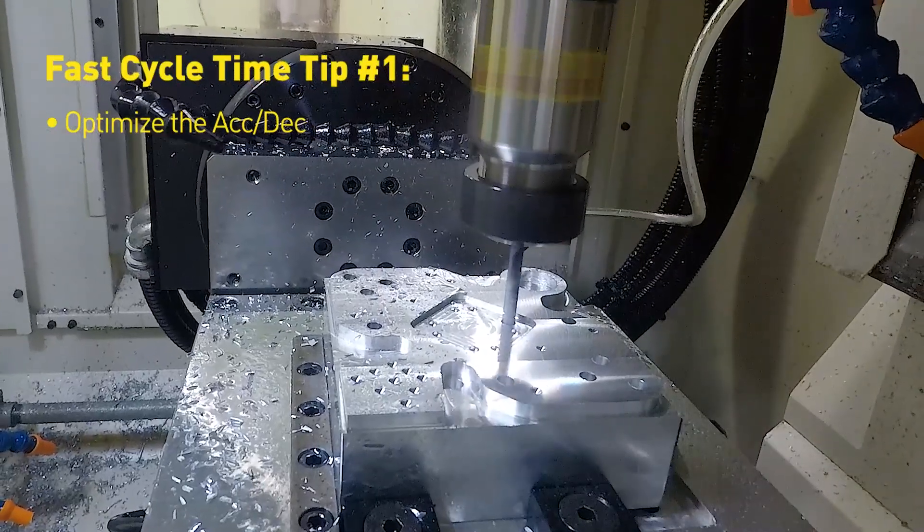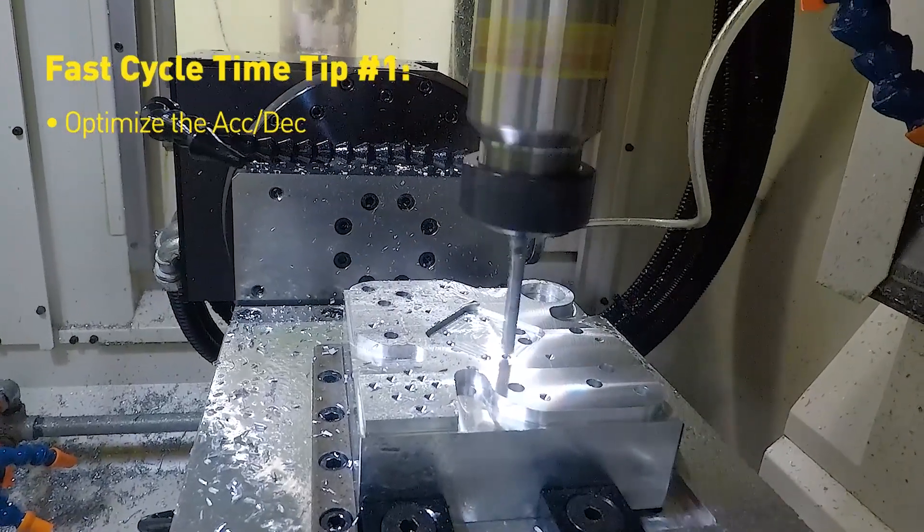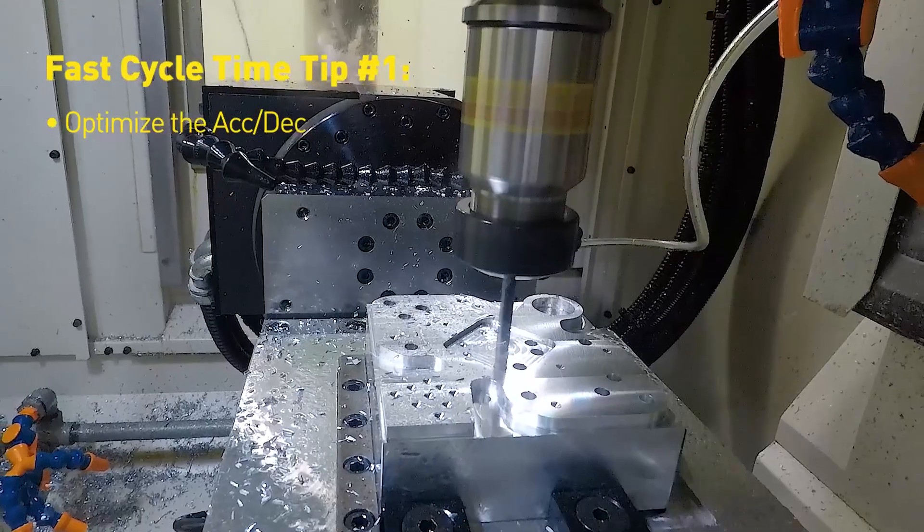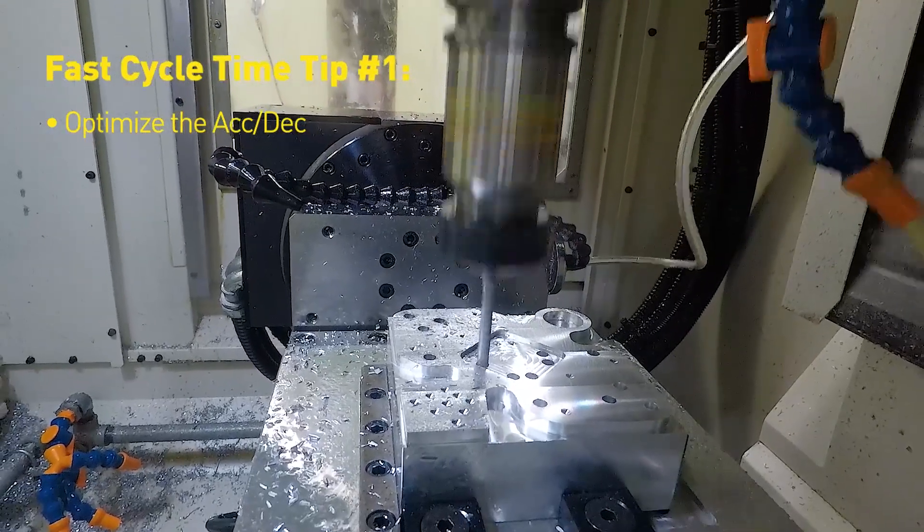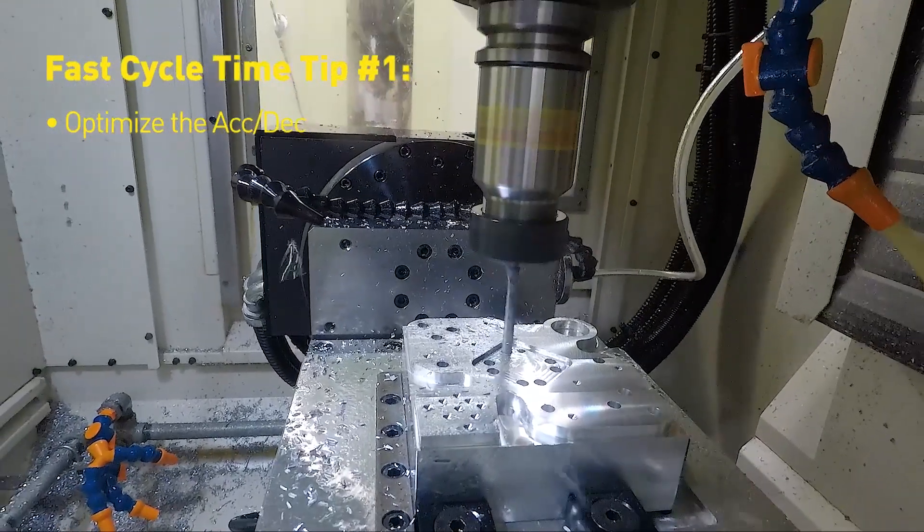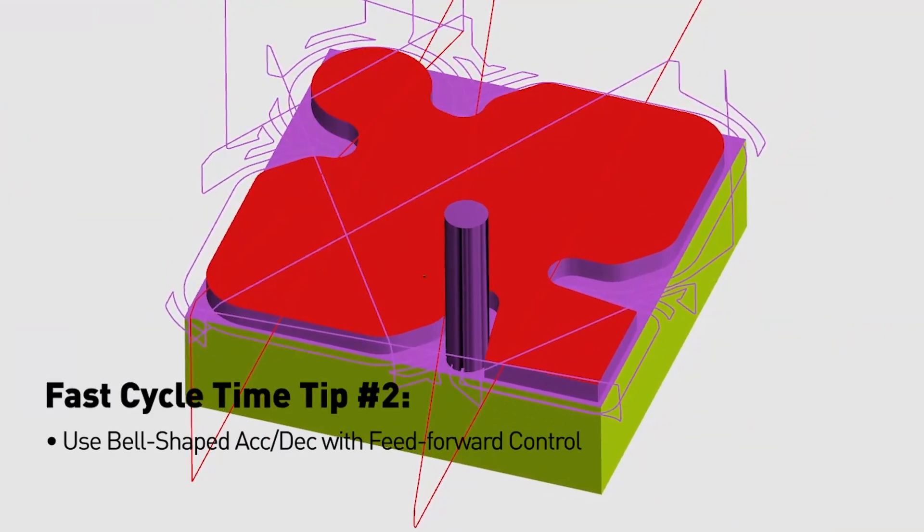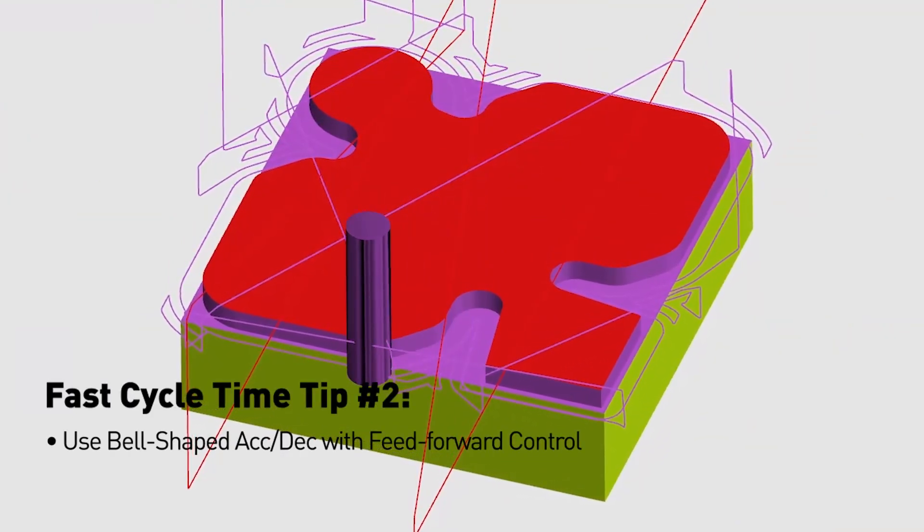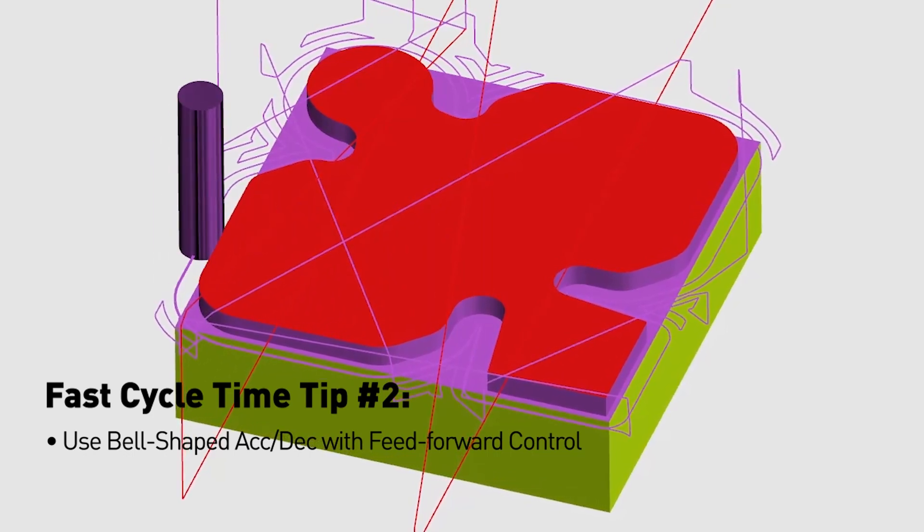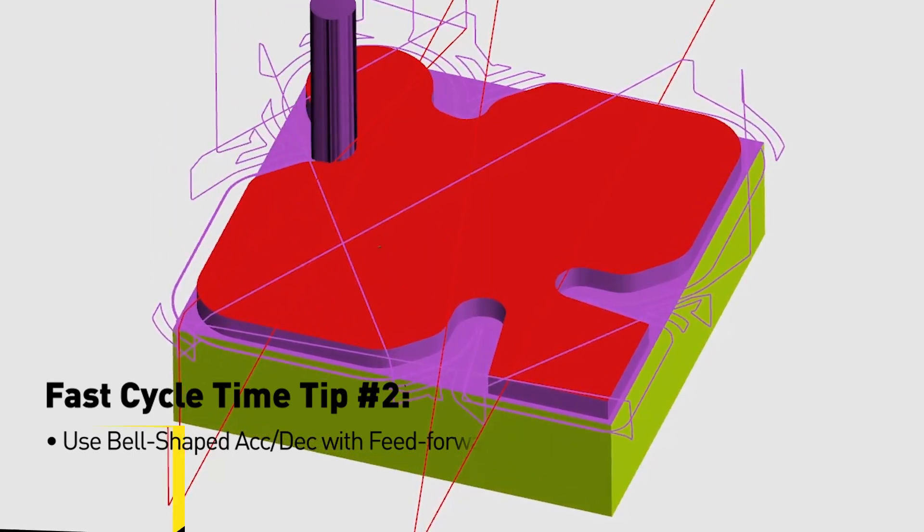Optimizing the acceleration and deceleration during positioning, then allowing block overlap during rapid traverse is one strategy the CNC can use to reduce cycle time. Using bell-shaped acceleration and deceleration with feed-forward control allows for faster moves between cutting operations, also reducing cycle time.